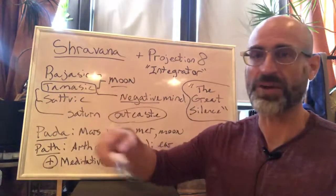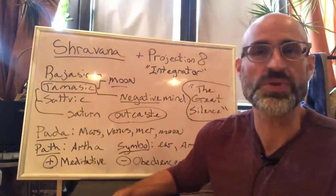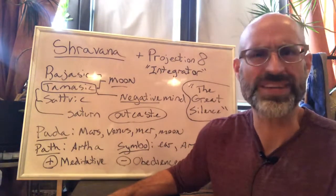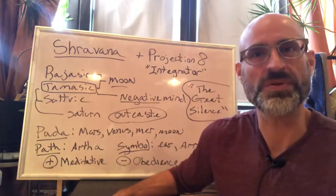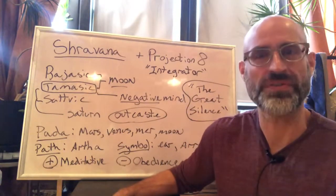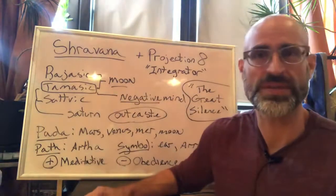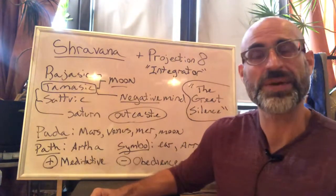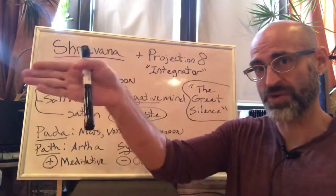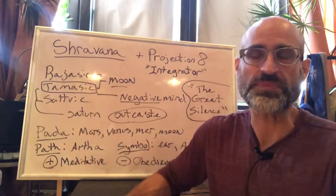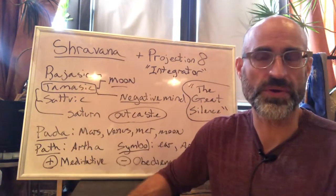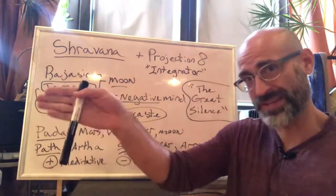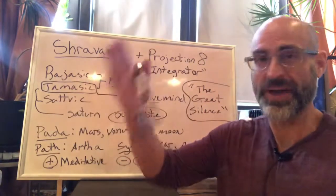So the symbol associated with this nakshatra is an arrow, which is very appropriate. Because the arrow is essentially being aimed and directed at a singular point. What does the arrow have to cut through in order to get to that point? It has to cut through air, it has to cut through ideas. In order to get to that point, it's got to cut through air. So in this particular case, if you have your moon or say Jupiter in this placement, it's kind of uncomfortable.